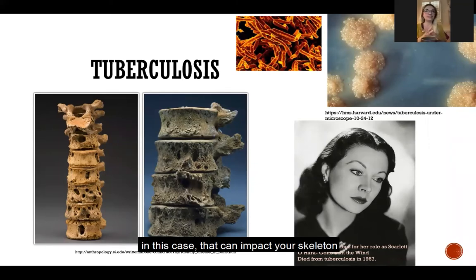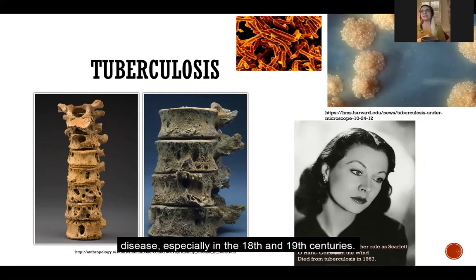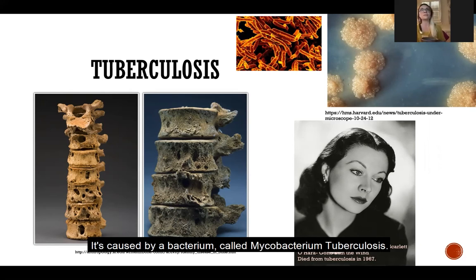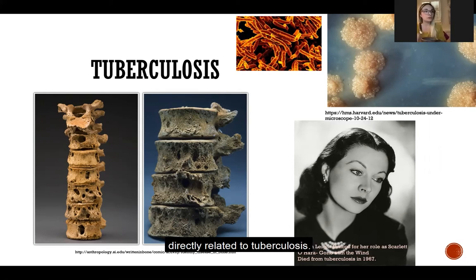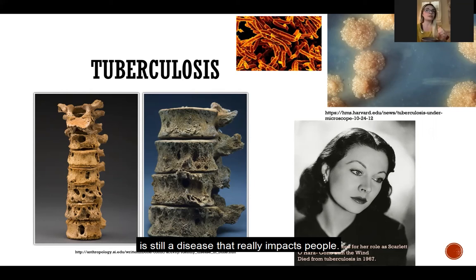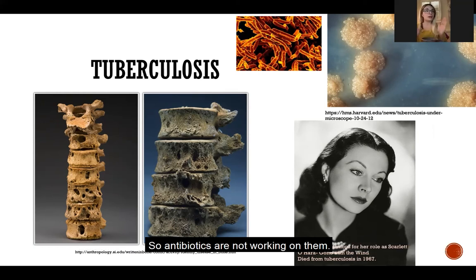Another disease that can impact your skeleton, although very rarely, is tuberculosis. Tuberculosis is characterized as this romantic disease, especially in the 18th and 19th centuries. It's caused by a bacterium called Mycobacterium tuberculosis. This is an infectious disease that primarily impacts your lungs, but it can impact other parts of your body. Today, there are roughly 2 million fatalities directly related to tuberculosis per year worldwide. There are also drug-resistant strains emerging, meaning antibiotics aren't working on them. So tuberculosis is pretty bad.